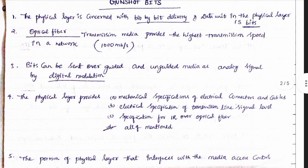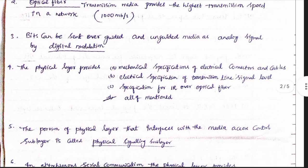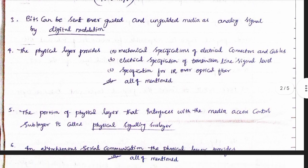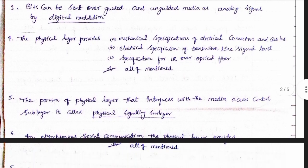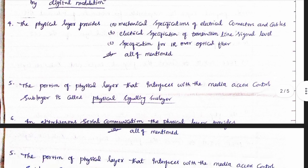The physical layer deals with bits. Bits can be sent over guided and unguided medium as analog signals by digital modulation. The portion of the physical layer that interfaces with the media is its control sublayer, called the physical signaling sublayer.